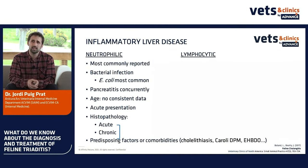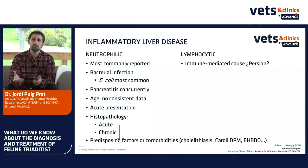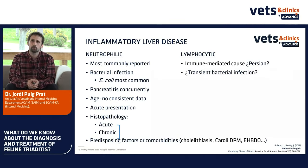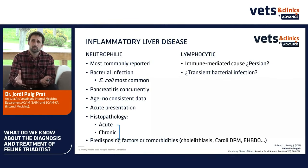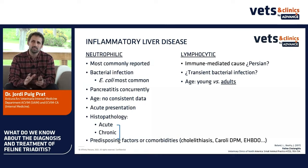When we talk about lymphocytic cholangitis, we think it's an immune-mediated disease. Studies from the 1980s in the UK thought that Persian cats were overrepresented, however more recent studies didn't show the same results. We think that even though it's immune-mediated, maybe there is a bacterial infection that triggers an autoimmune response — something we still don't know for sure but we suspect.